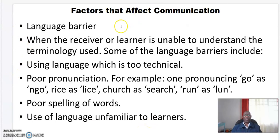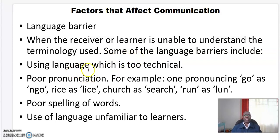Now let's look at the factors that affect communication. One: language barrier — when the receiver or the learner is unable to understand the terminology used. Some of the language barriers include language which is too technical, poor communication, poor spelling of words, and use of language unfamiliar to learners.